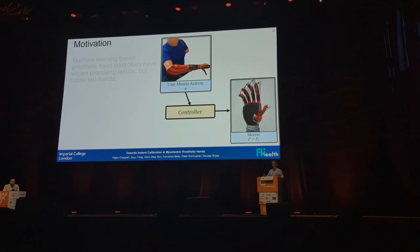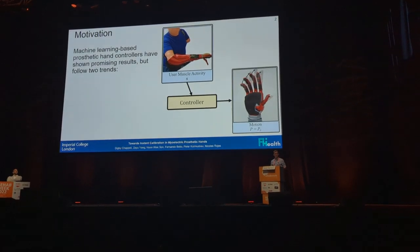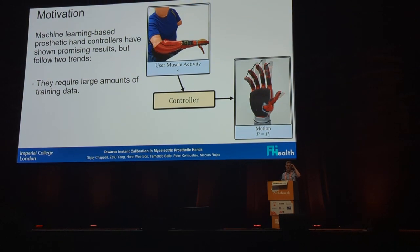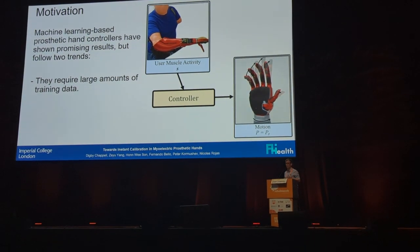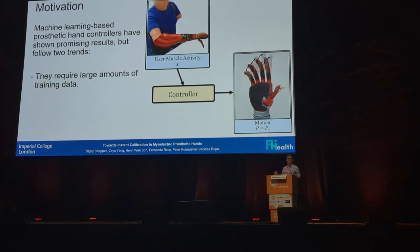That's the primer. Now, you'll have seen a lot of machine learning-based prosthetic hand controllers, and they produce very sophisticated results that look very nice and flashy, but in reality they kind of follow two trends. The first is that they require large amounts of training data, and what that translates to for the user is that the user's going to have to record the same motion over and over again. This can take time and also can cause phantom limb pain.